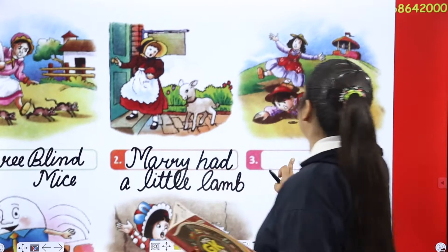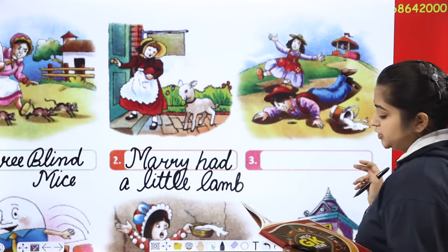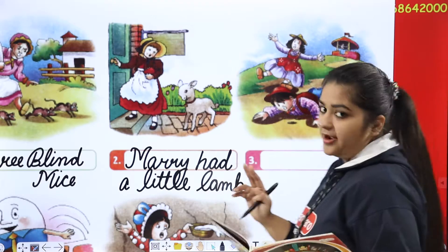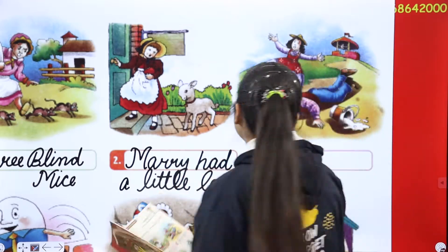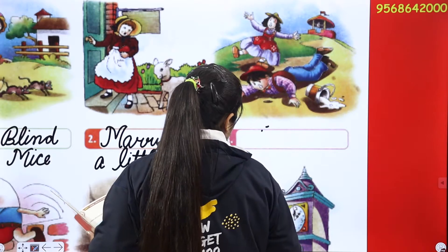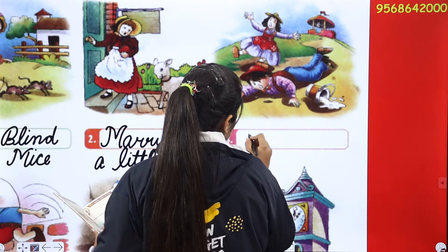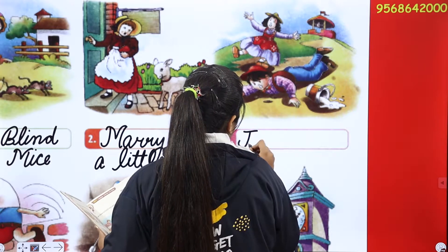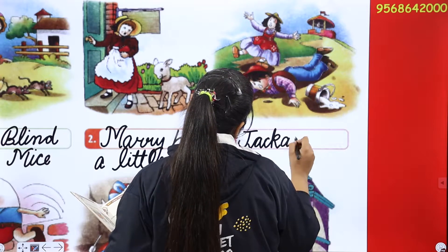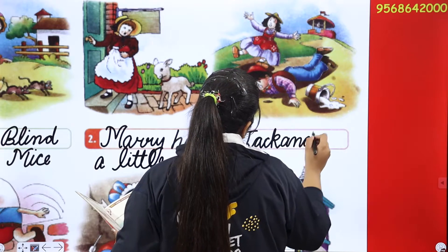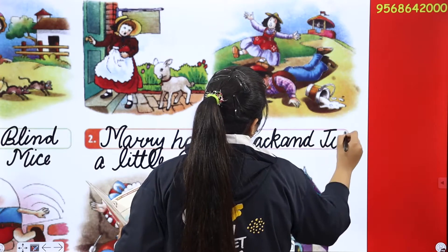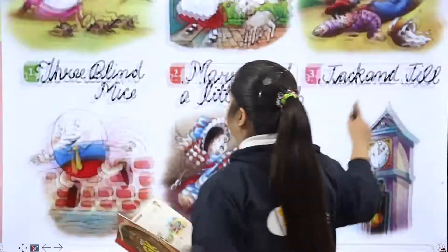Moving on to the third one. We are getting to know that there are two naughty children. And the rhyme name is Jack and Jill. This is a very easy chapter.